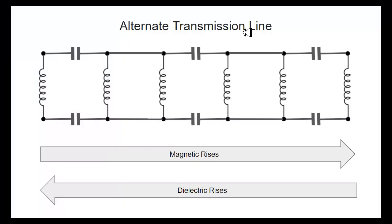Here you can see in the case of the alternate transmission line, where the inductors are in parallel and the capacitors are in series, that the magnetic strength rises as you go down the line, and the dielectric strength decreases as you go down the line. So, magnetic gets bigger this way, dielectric gets bigger this way.